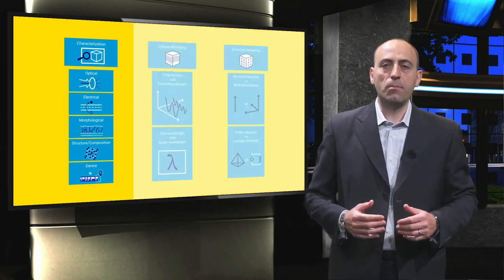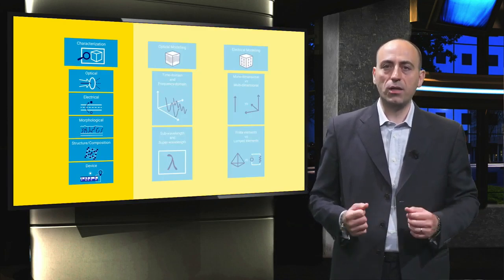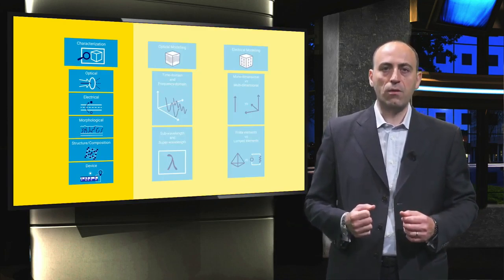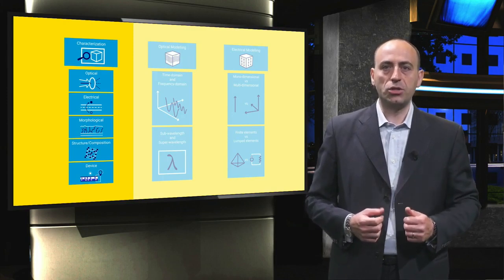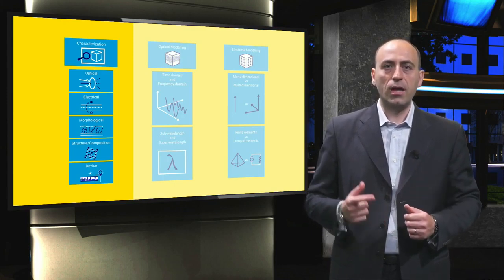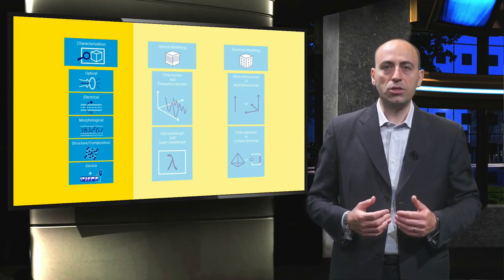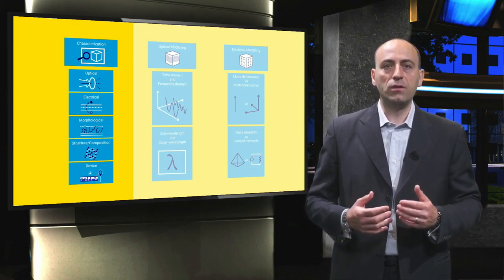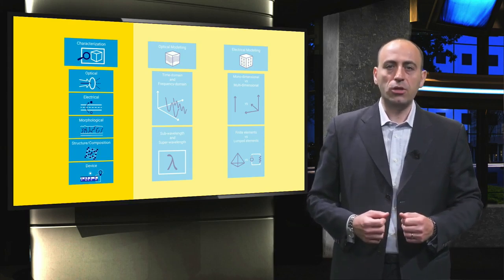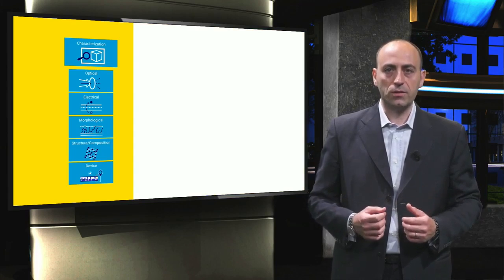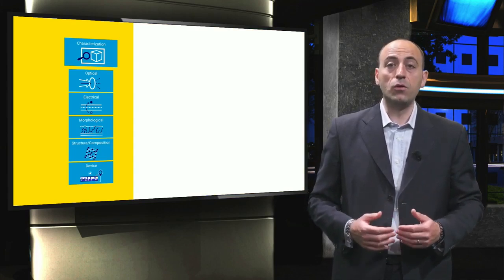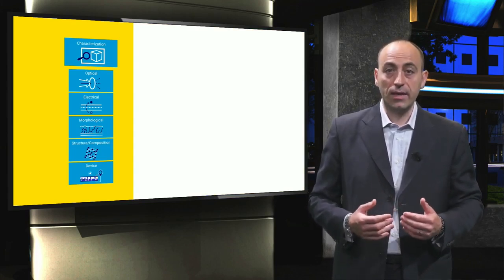Several characterization methods are usually employed in the field of photovoltaics. In general, they can be grouped in five categories: optical characterization, electrical characterization, analysis and morphology, structure and composition, and the determination of the device performance. Each of these five aspects is essential for the success of simulations and must be carried out before the proper modeling activity can start.